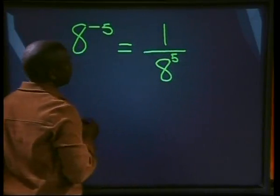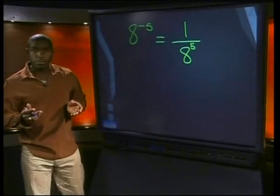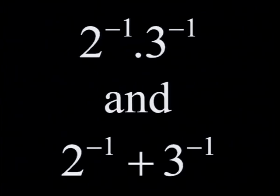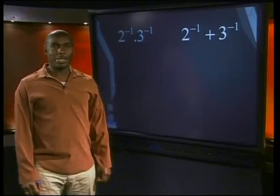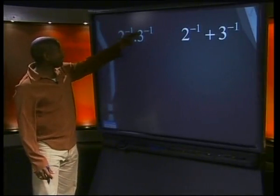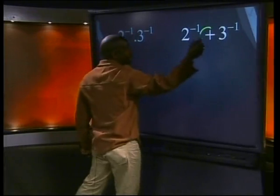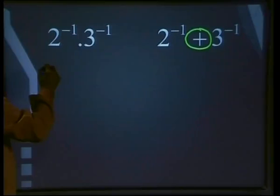Let's move on to some calculations with negative exponents. Is there a difference between two to the negative one multiplied by three to the negative one, and two to the negative one plus three to the negative one? Here we're multiplying powers with negative exponents, whereas here we're adding powers with negative exponents. Remember what we just learned.